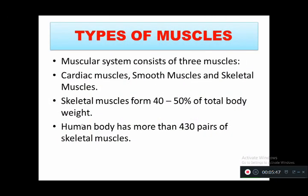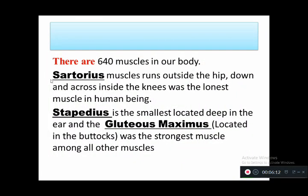Now the second question: types of muscles. The muscular system consists of three muscles — cardiac, smooth, and skeletal. Skeletal muscles account for 40 to 50 percent of total body weight and the human body has more than 430 pairs of skeletal muscles. There are 640 muscles in total. The sartorius is the longest muscle, stapedius is the smallest, and gluteus maximus is the strongest muscle, commonly used for IM injections.